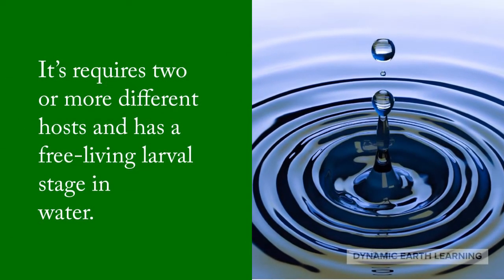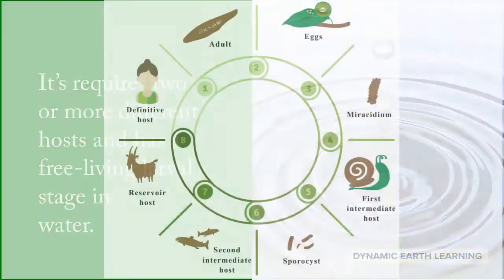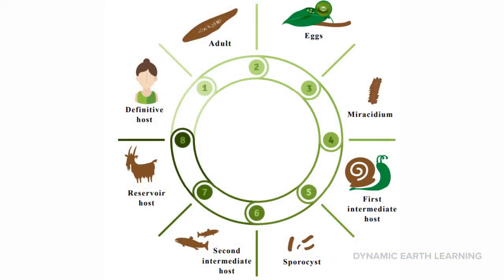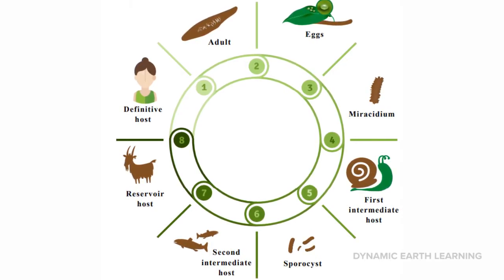The liver fluke life cycle is complex. First, it infects the plants that are eaten by the fish. After the fish have eaten the plants, the liver fluke lays eggs inside the fish. The eggs are released through the fish's feces and are then passed on to the snails.